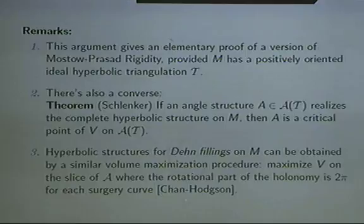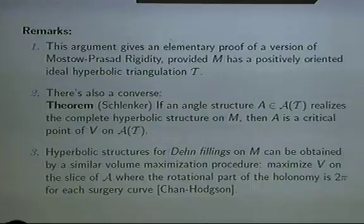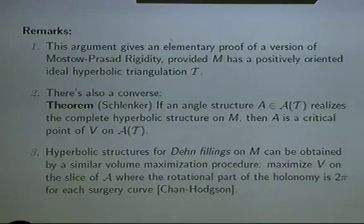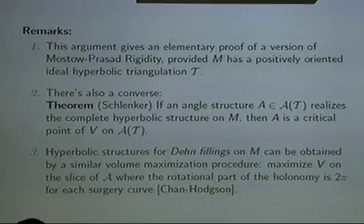That was written down in a fourth-year project by Ken Chan, who was working with me at Melbourne. So this is one approach to finding hyperbolic structures — starting with angle structures and doing this volume maximization procedure. The hope is that if you can always find a suitable triangulation to start with, you can use this kind of method to show that certain triangulations are geometric. This has been done for some nice examples like punctured torus bundles and two-bridge knot complements, and there are lots of other cases where this procedure may work, giving more information about the connections between the combinatorics or topology of your manifold and the geometry.